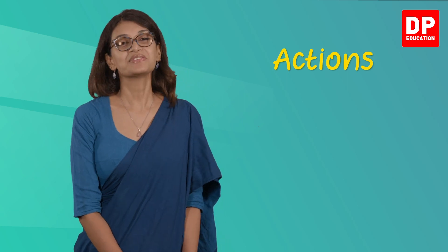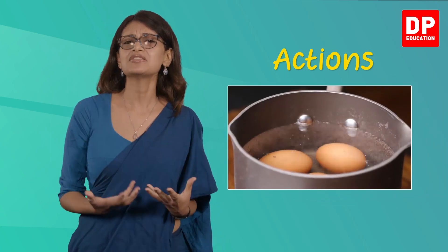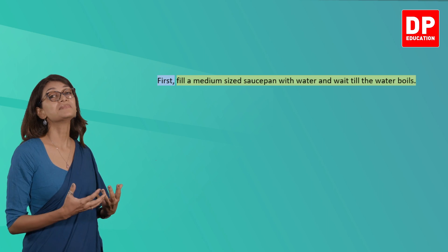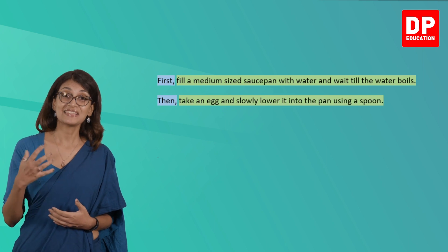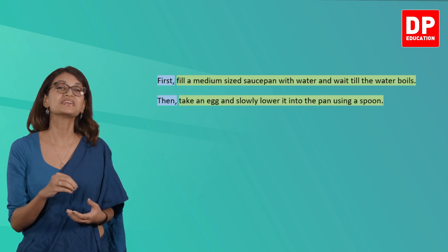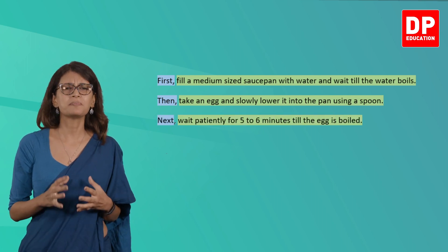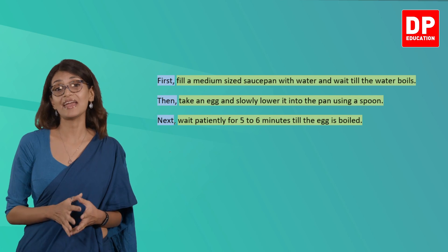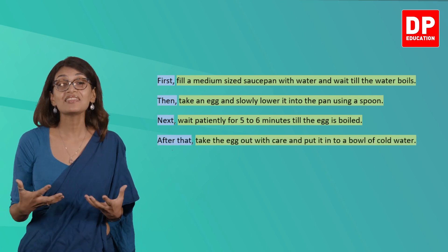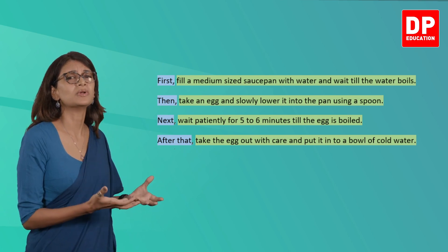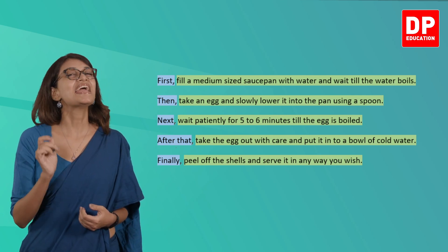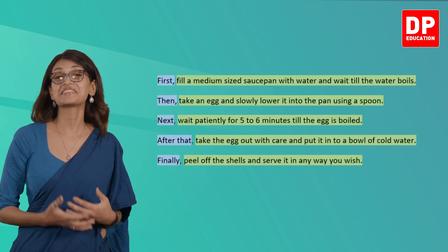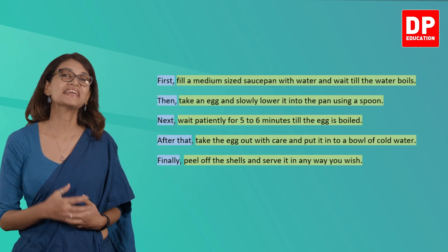Let's look at how we can use the phrases we just learned. I am going to take the example of giving instructions on how to boil an egg. First, fill a medium-sized saucepan with water and wait till the water boils. Then take an egg and slowly lower it into the pan using a spoon. Next, wait patiently for five to six minutes till the egg is boiled. After that, take the egg out with care and put it into a bowl of cold water. Finally, peel off the shell and serve it in any way you wish.